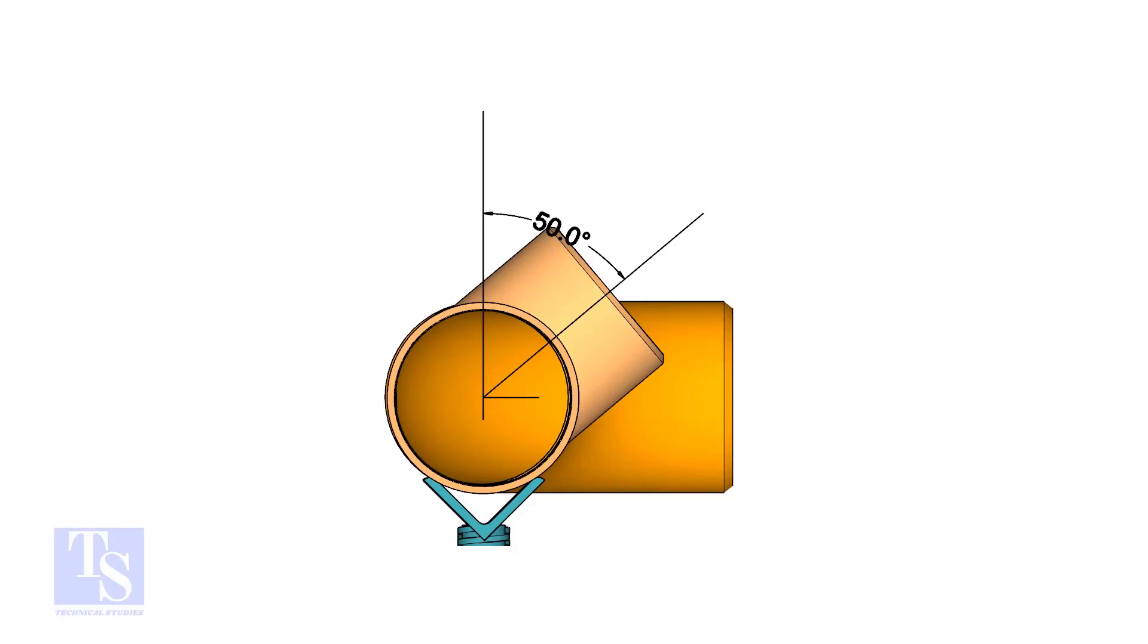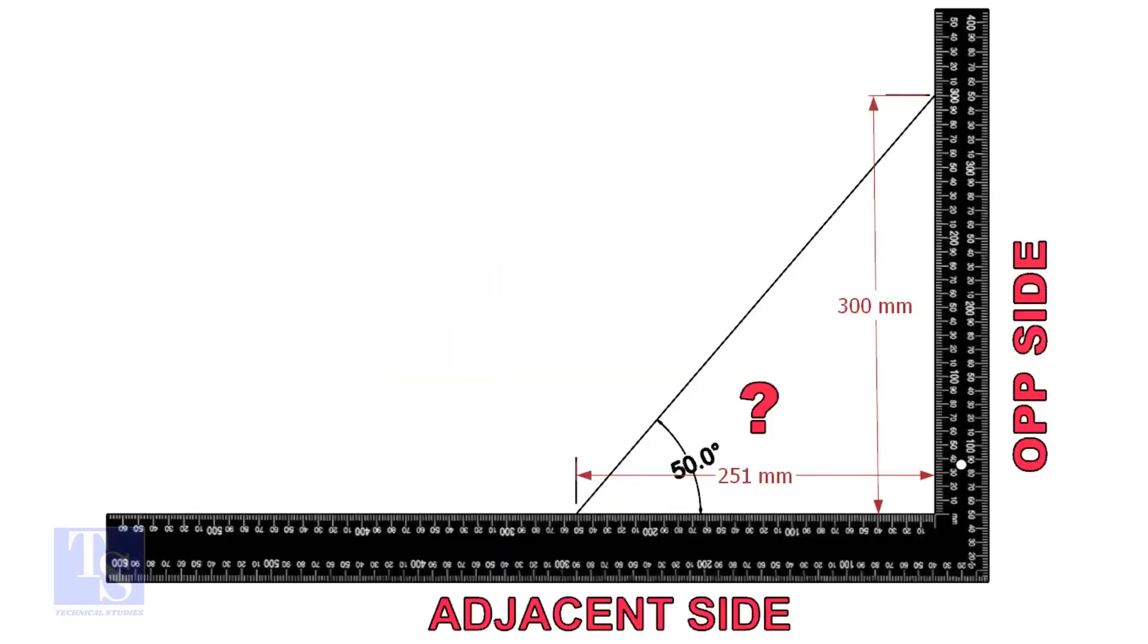The formula and the method are same for all degrees. Let us learn some tan rule calculation. Tan degree is equal to opposite side divided by adjacent side. For this formula, we know only the tan degree.